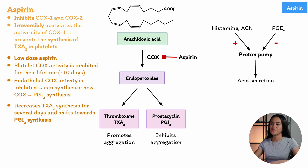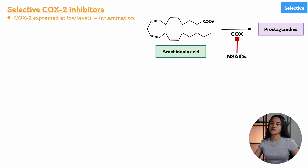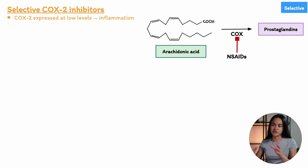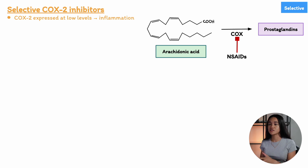That covers non-selective NSAIDs. Let's now move on to the second class: selective cyclooxygenase inhibitors. COX-2 is usually present in low amounts under normal conditions, but its level increases during inflammation. The increase in COX-2 expression is thought to contribute significantly to the production of pro-inflammatory mediators. NSAIDs like aspirin and ibuprofen were commonly used to treat chronic inflammatory diseases such as arthritis, but they could cause GI issues like chronic gastritis and an increased risk of peptic ulcers. Patients with chronic inflammatory diseases often needed high doses over long periods, leading to severe gastrointestinal side effects.